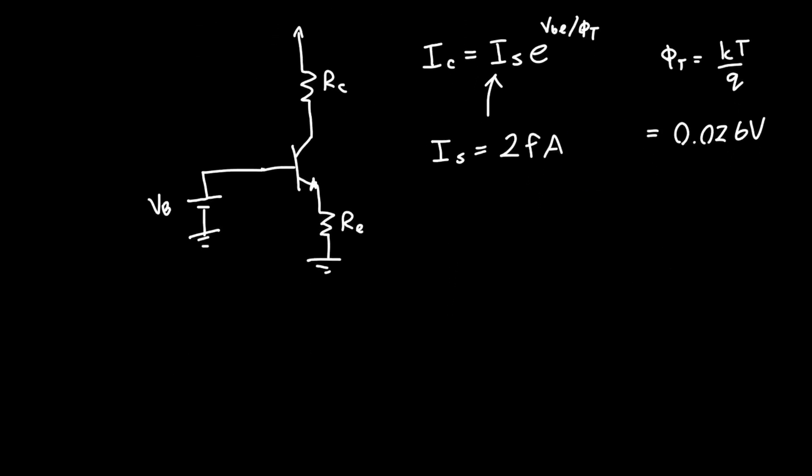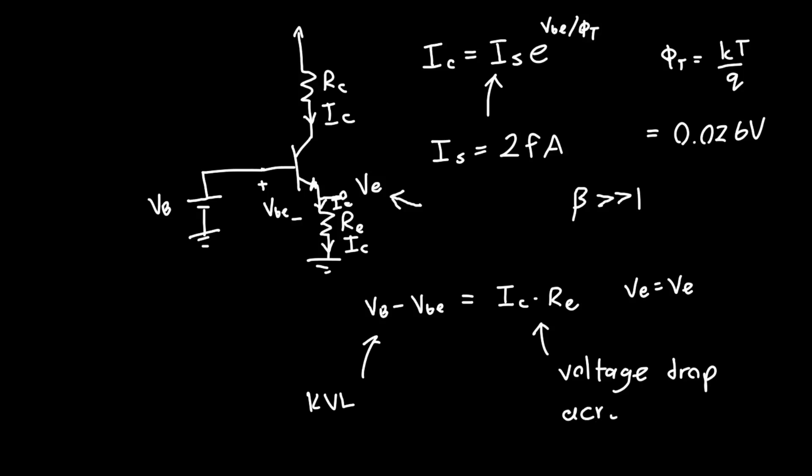How do we solve this circuit? We do exactly the same thing we did before, except now instead of assuming a value of VBE, we have to solve for it. We're going to set up an equation. VB minus VBE, this voltage at the emitter, must be equal to whatever current is flowing through here, IC times RE. That's just the voltage drop across RE.